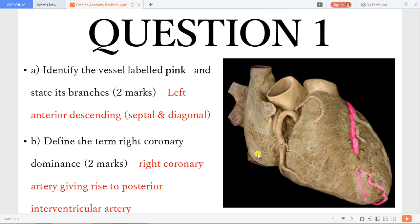Welcome back to my channel. Today we are discussing cardiac anatomy. You can see the left anterior descending artery here giving rise to the septal and the diagonal branches.